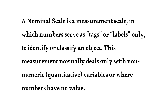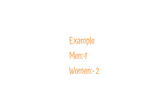For example, men are labeled 1 and female are labeled 2. However, this labeling doesn't imply that one is better than the other. The Nominal Scale is a categorical scale — numbers simply serve as labels.